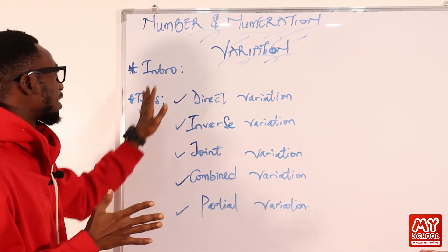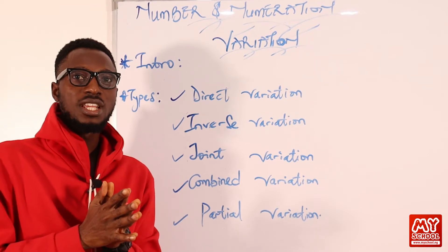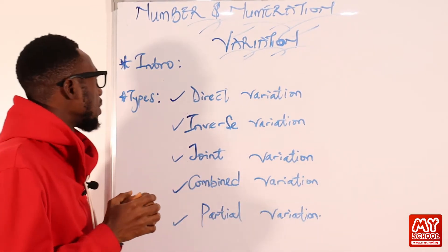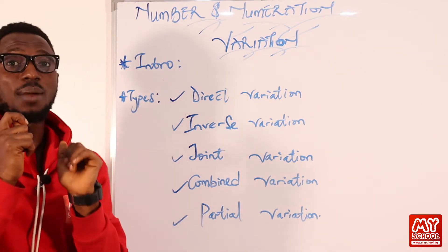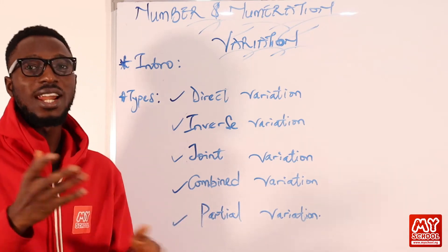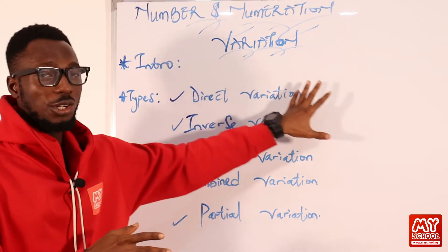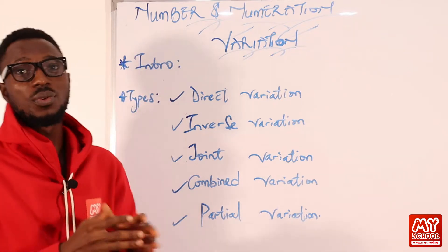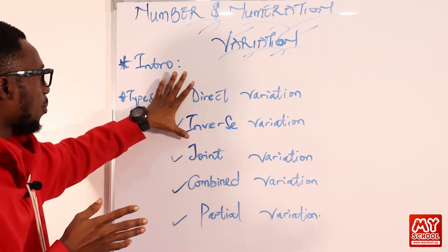What is variation? That's the intro part. Variation is a kind of relationship that reveals what happens between quantities. We have types: direct, inverse, joint, combined, and partial variation.